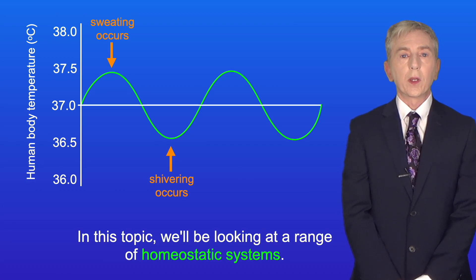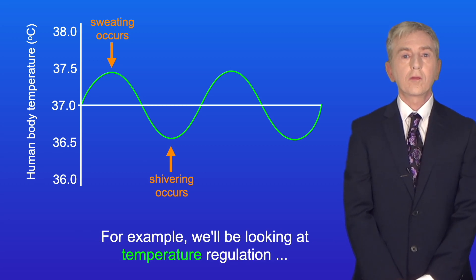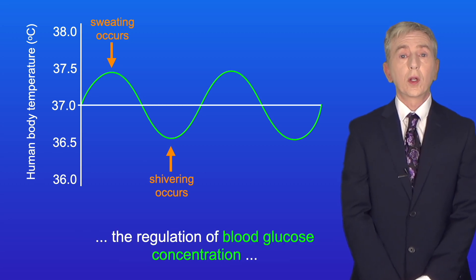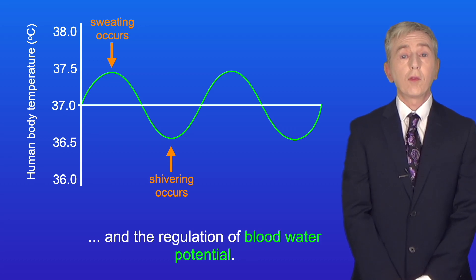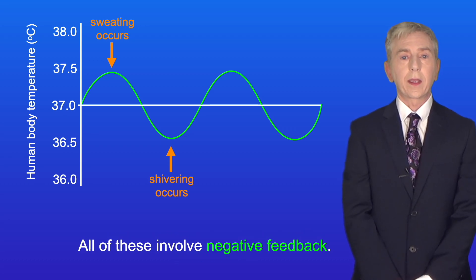Now in this topic we'll be looking at a range of homeostatic systems. For example, we'll be looking at temperature regulation, the regulation of blood glucose concentration, and the regulation of blood water potential. And all of these involve negative feedback.